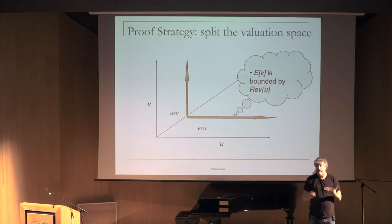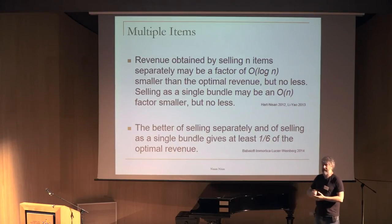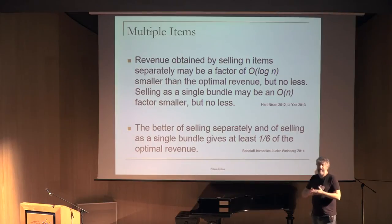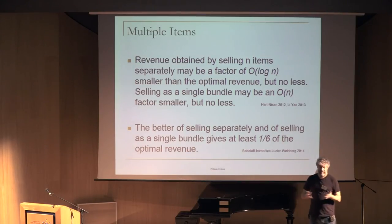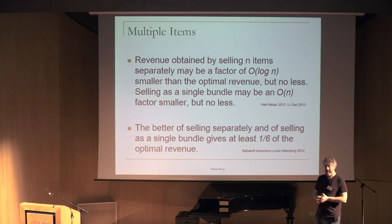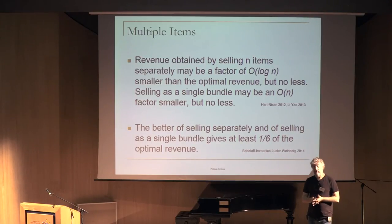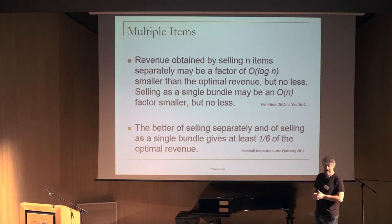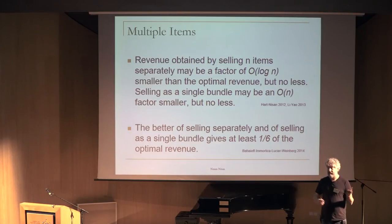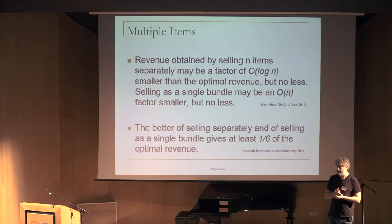This can be generalized. For more than two items, the loss grows logarithmically with the number of items — so selling separately grows worse than a constant factor but not terribly so. However, always taking the better of selling all items as a bundle or selling each separately gives a loss of only a constant factor — at most a factor of 6 or so.